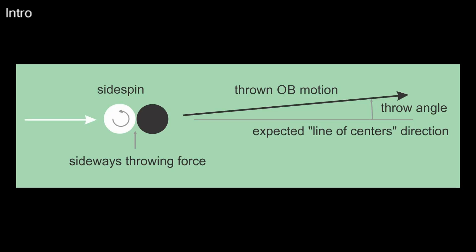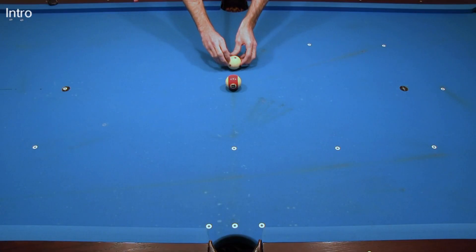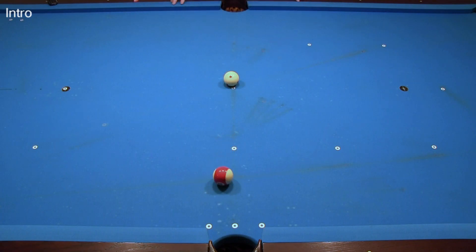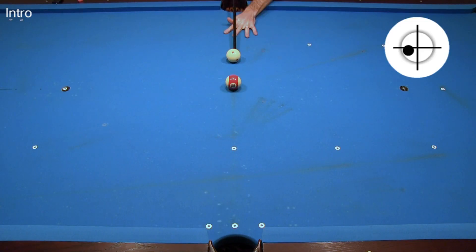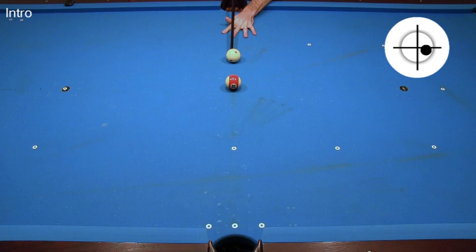Throw can also be caused by side spin, in which case it is called spin-induced throw, or SIT. Again, whichever way the cue ball rubs on the object ball during contact is the direction the object ball gets thrown. With a straight shot with left spin, the cue ball rubs on the object ball to the right, causing throw to the right. And with a straight shot with right spin, the cue ball rubs the object ball to the left, causing throw to the left.